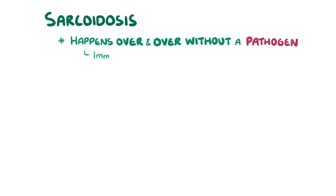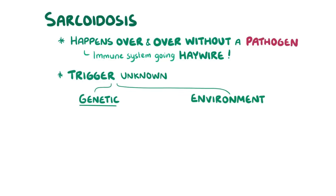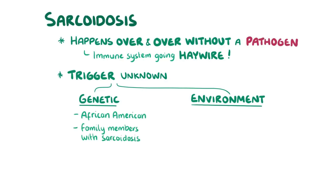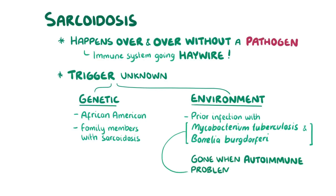In other words, the immune system seems to be going a bit haywire in the absence of a pathogen. The precise trigger isn't actually known, but there are some known genetic and environmental risk factors. Genetic risk factors include being African American and having a family member with sarcoidosis. Environmental risk factors include a prior infection with Mycobacterium tuberculosis and Borrelia burgdorferi, but to be specific, these pathogens are long gone when the autoimmune problem sets in.